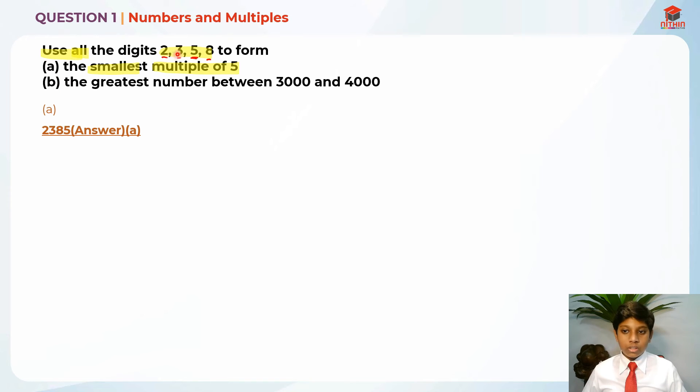For part B, they are asking us to use all the digits 2, 3, 5 and 8 to form the greatest number between 3,000 and 4,000.